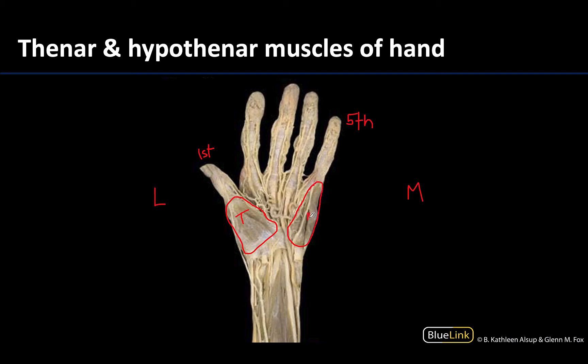You will have a similar set associated with the fifth digit — these are the hypothenar muscles of the hand. Again there are three, and they will also flex, abduct, and oppose in terms of the fifth digit.